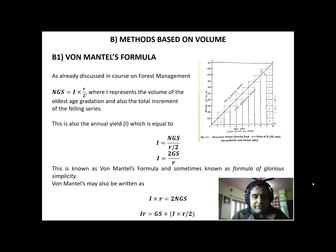If we rearrange the figures in this formula, we can write it as i equals NGS divided by (r/2). Rearranging again, we have i equals 2GS divided by r. This is known as von Mantel's formula, and sometimes known as the GS formula of glorious simplicity.